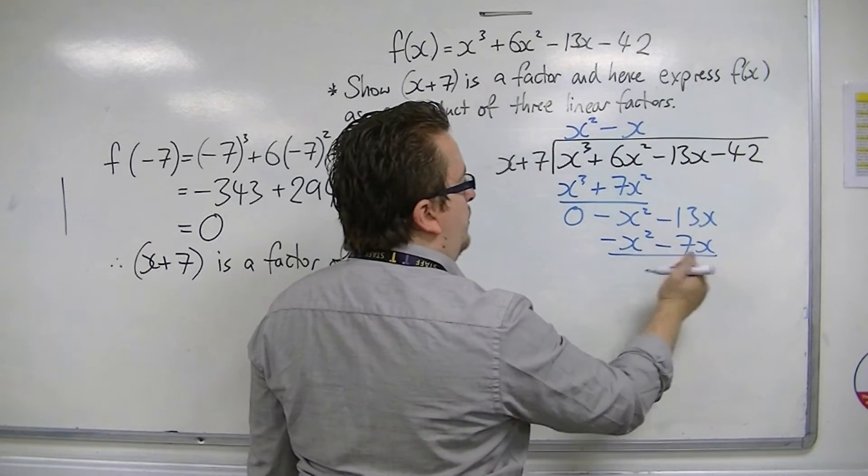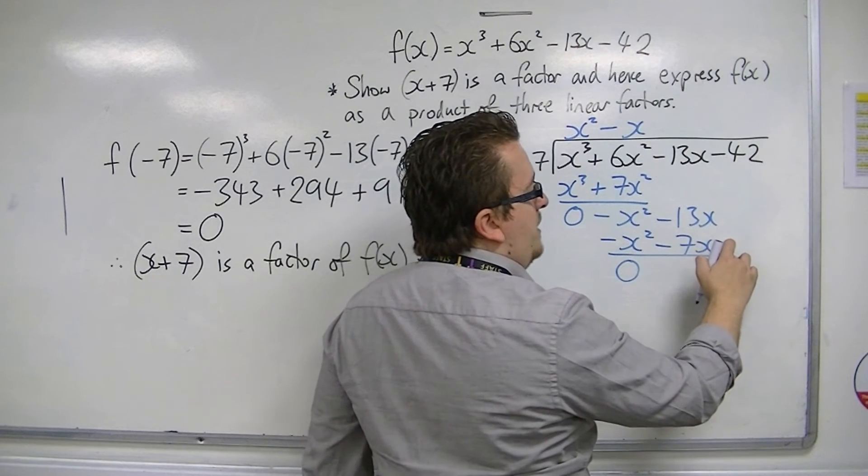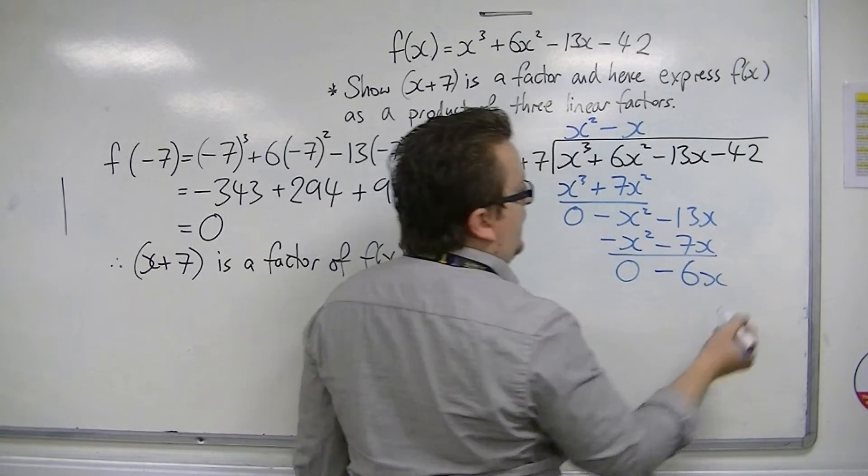Draw a line, perform a subtraction. Minus 13x take away minus 7x gets me, well, minus 6x.